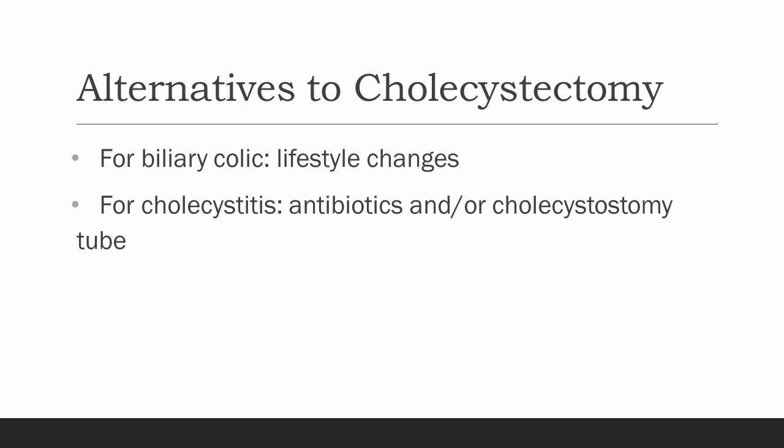Alternatives to surgery in those with biliary colic include lifestyle changes such as reducing the intake of fatty foods, which can cause contraction of the gallbladder. An alternative for patients with acute cholecystitis is antibiotics and lifestyle changes, but this has a chance of recurrence, non-resolution, and other complications related to gallstone disease. In patients for whom surgery is very high risk, we will sometimes advise placement of a cholecystostomy tube — a tube placed by interventional radiology to drain the gallbladder. This is not generally recommended for patients who are fit for surgery, as it is ideally meant as a short-term solution until someone is healthy enough for surgery.